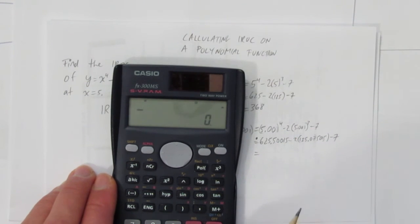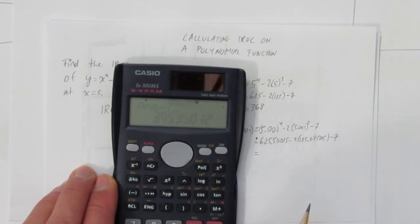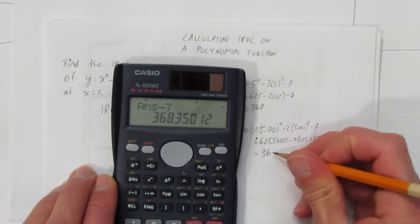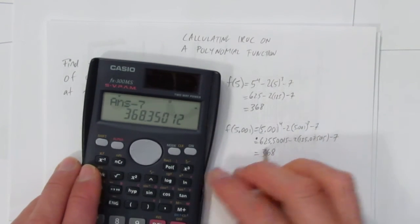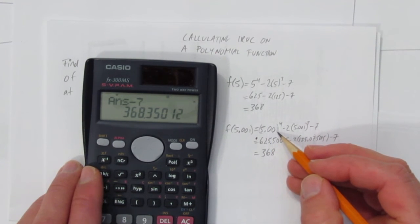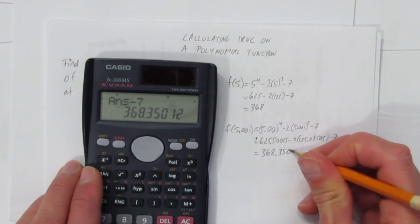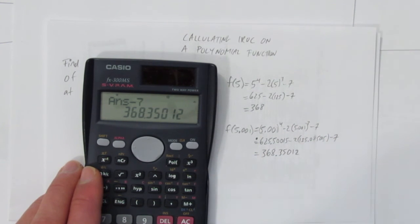And now, let's compute that all at once. 625.50015, minus 2 times 125.075015, take away 7. And we're pretty sure we're doing it right, because we got a number very similar to f at 5, right? This is only one one-thousandth of an x value past this one, so they should be very similar, and they are.